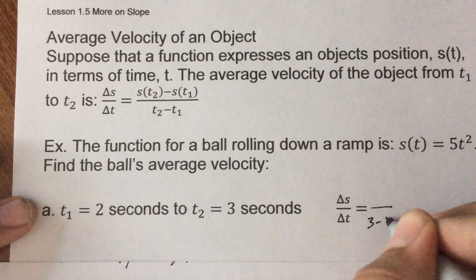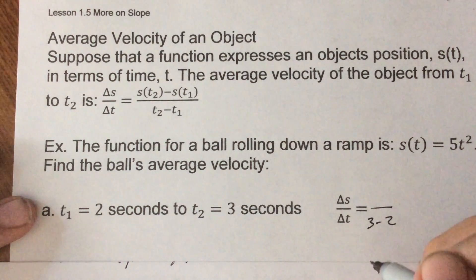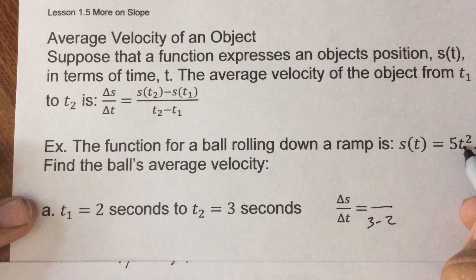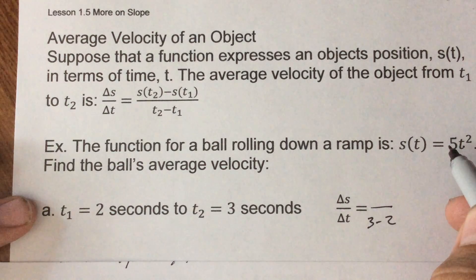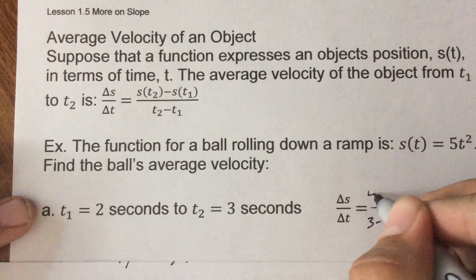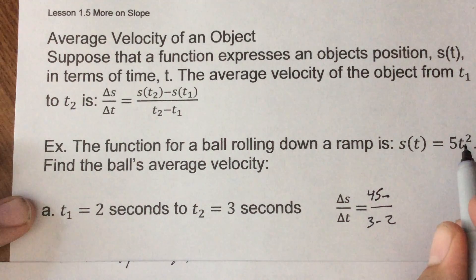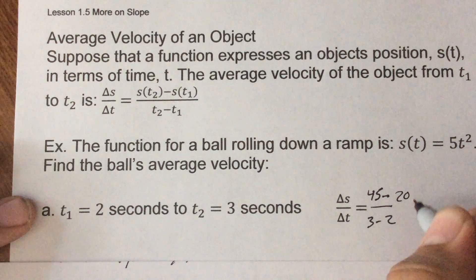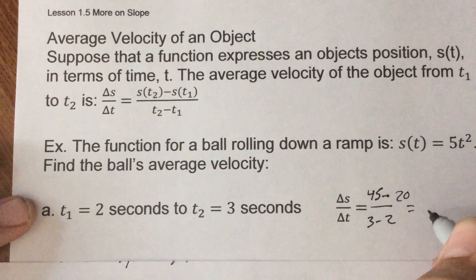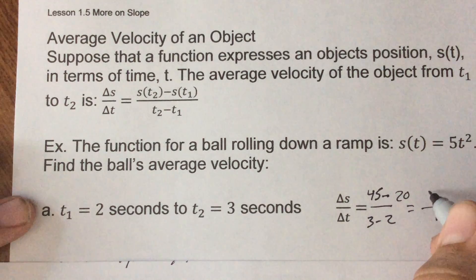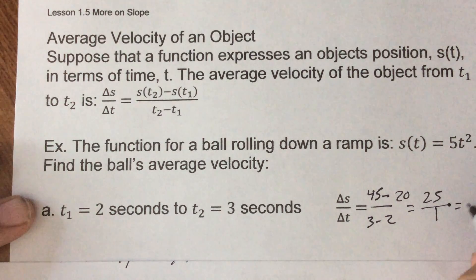First they want from three to two seconds, so the bottom would be three minus two. The top here, three squared would be nine, nine times five would be 45 minus if I put two in there, two squared is four, four times five would be 20. And I would end up with, well three minus two would be one on the bottom, 45 minus 20 is 25. So in other words 25, and I believe this is feet per second.